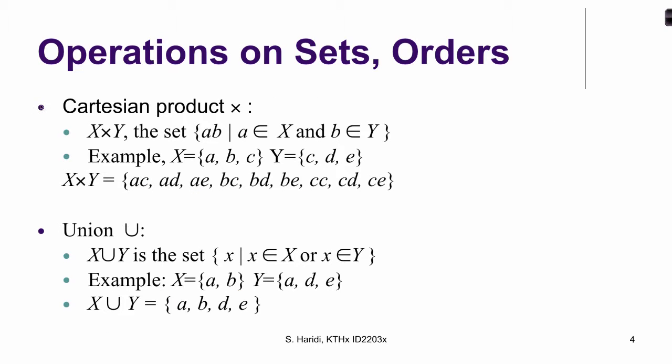So we look now to operations on sets. The first operation is Cartesian product. If we write this notation, it will mean the set that contains elements that are pairs A and B, such that A is element of X and B is element of Y. Here is an example. If X is a set ABC and Y is a set CDE, then the Cartesian product is the set containing the following pairs: A combined with C, A combined with D, A combined with E, and then B combined also by the same way, and C combined with C, with D, and with E.